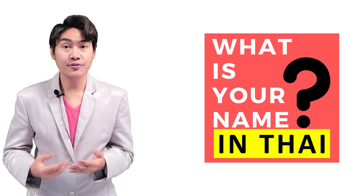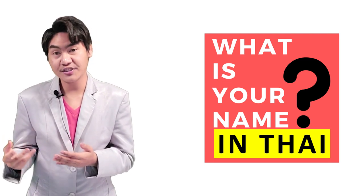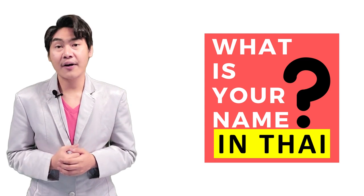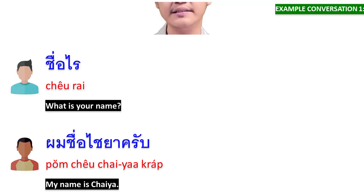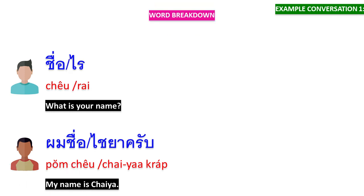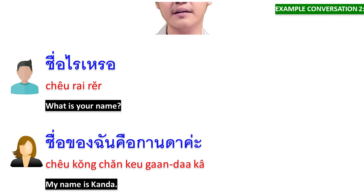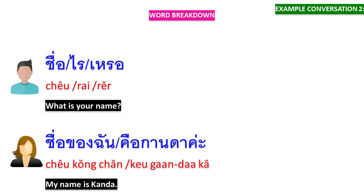This is how you ask 'What is your name?' and how to respond to it. Next, you are going to learn example conversations. ชื่อไร — ผมชื่อไชยาครับ: ชื่อ means 'your name', ไร means 'what is', ผมชื่อ means 'my name', ไชยาครับ means 'it's Chaiya'. ชื่อไรเหรอ — ชื่อของฉันคือกานดาค่ะ: หรอ is a particle of this sentence.